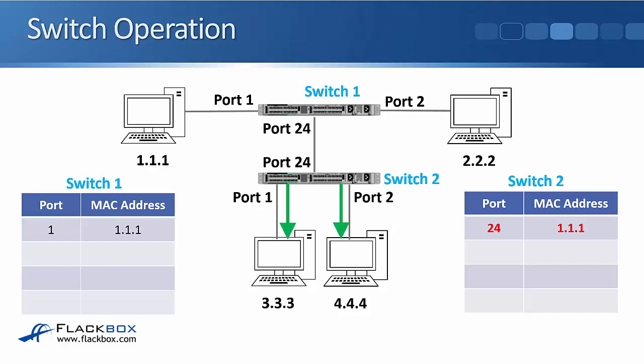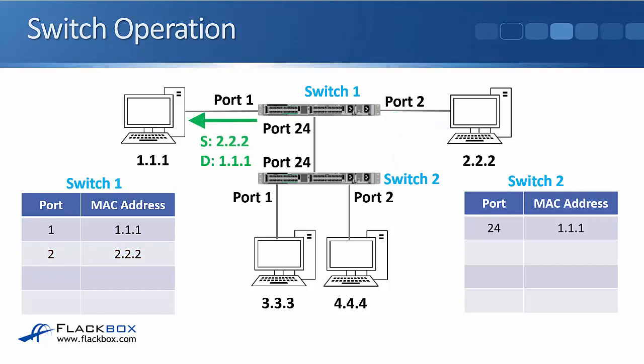Switch 2 updates its MAC address table because it learned that 1.1.1 was reachable through port 24, since that's the port the frame came in on. The frame reaches 2.2.2, which sends return traffic with a source MAC of 2.2.2 and a destination MAC of 1.1.1. Switch 1 updates its MAC address table with the entry for 2.2.2 on port 2, then forwards the frame out port 1 only. Notice that the frame does not get sent down to switch 2 because switch 1 knew it should go out only on port 1.